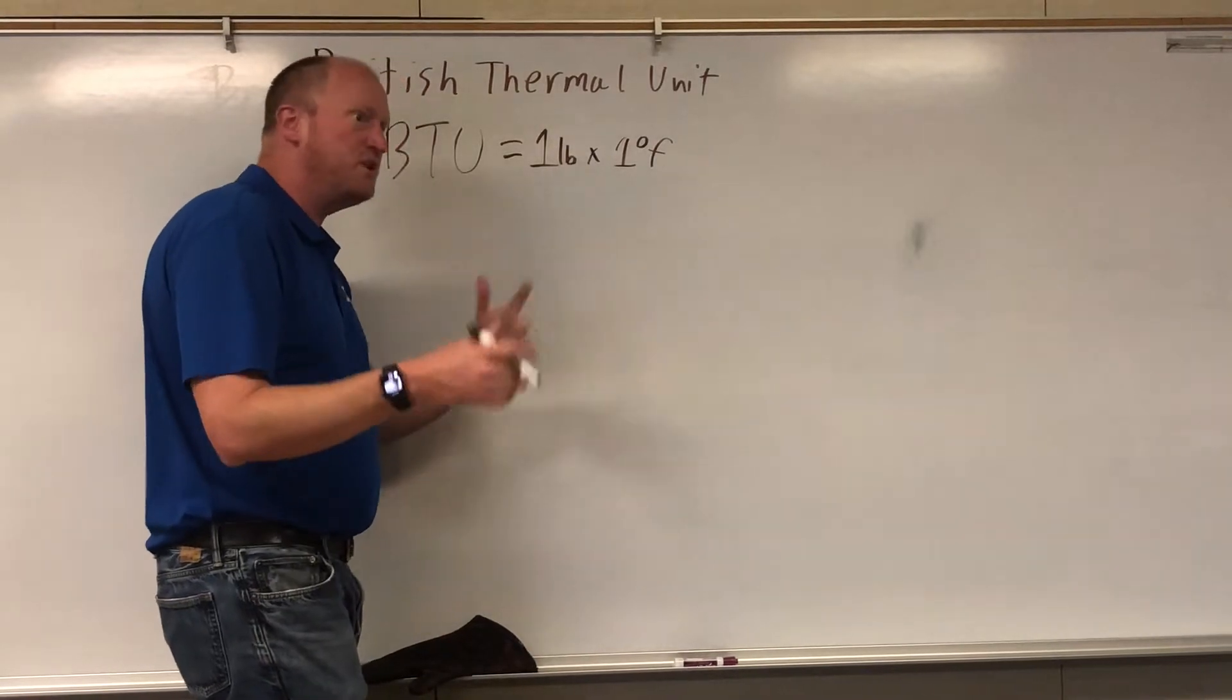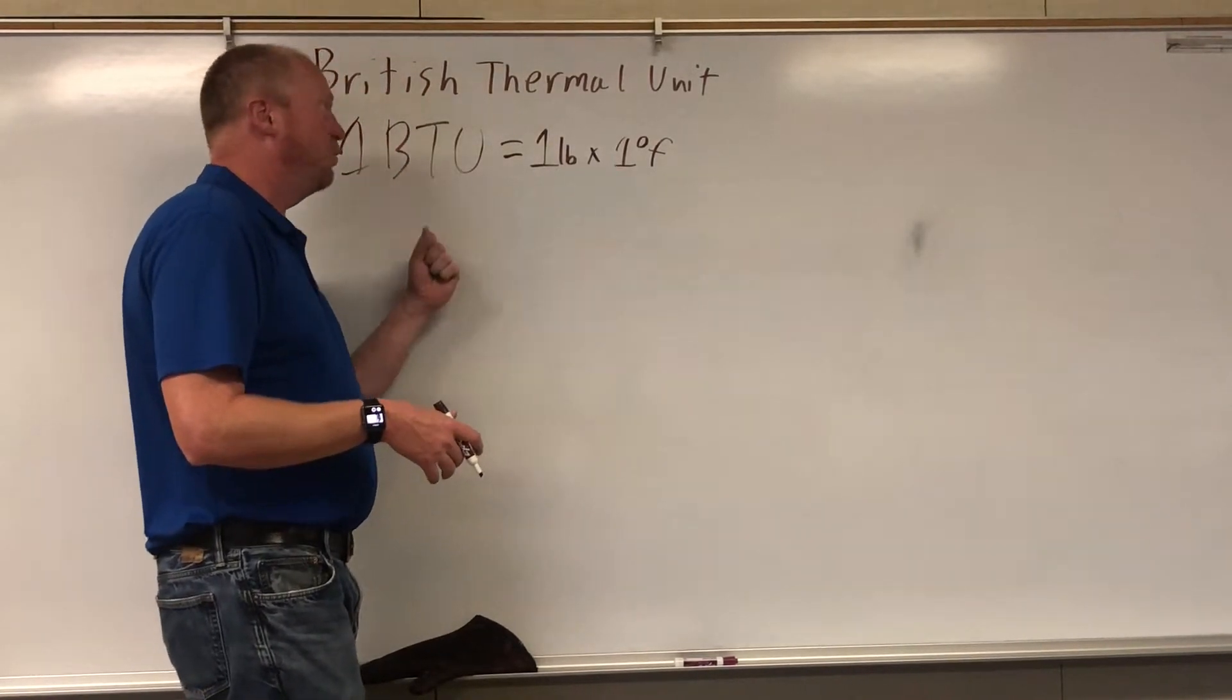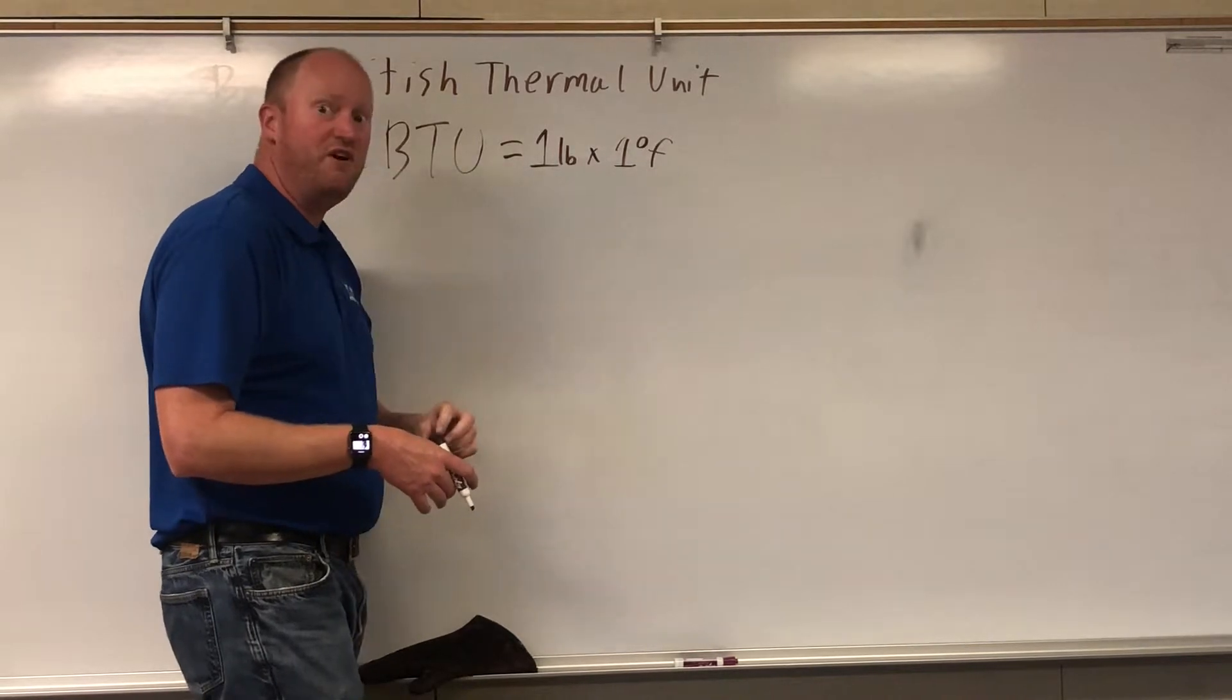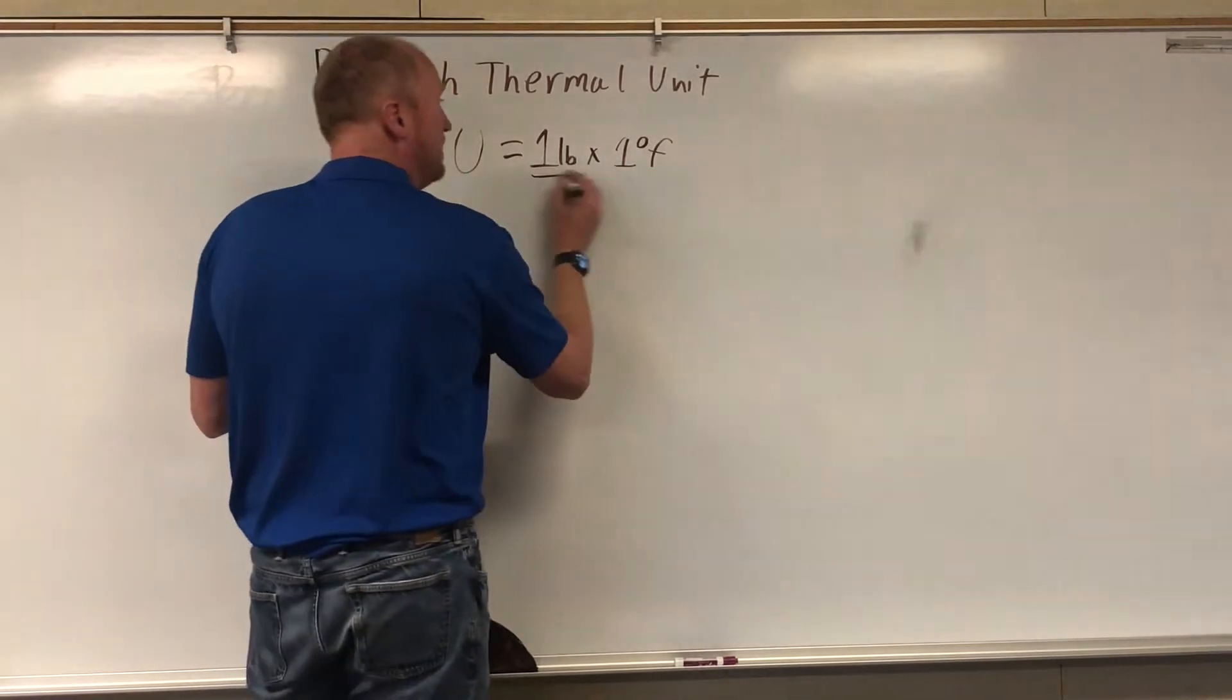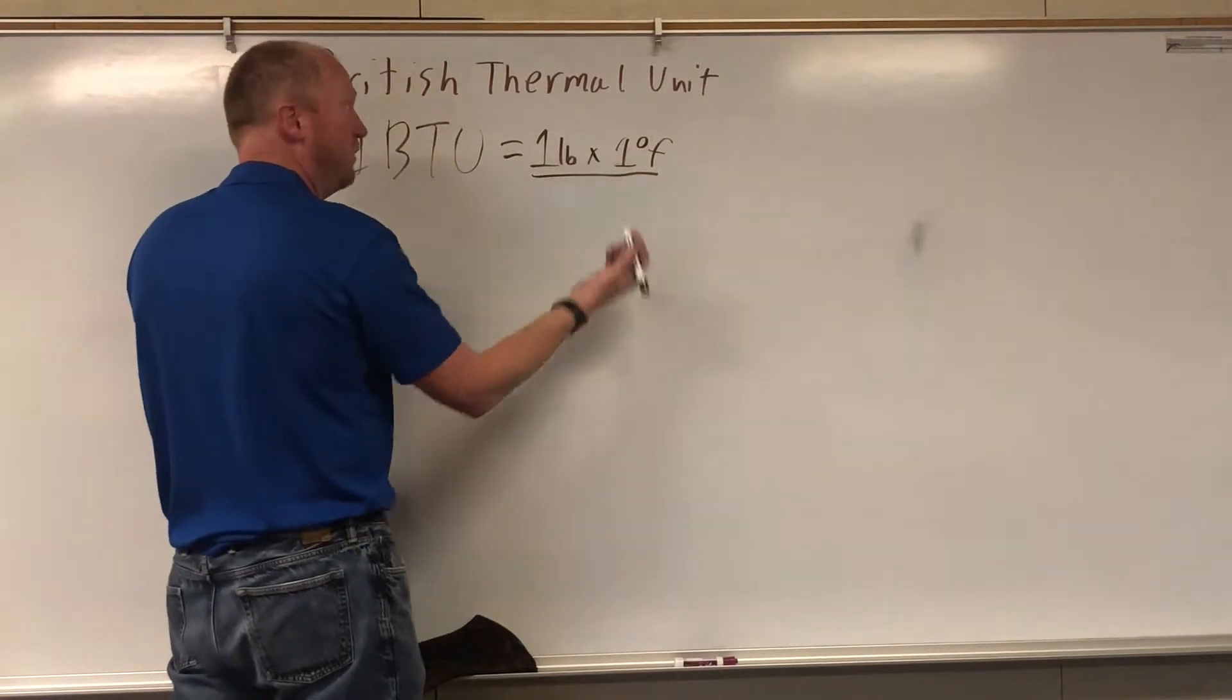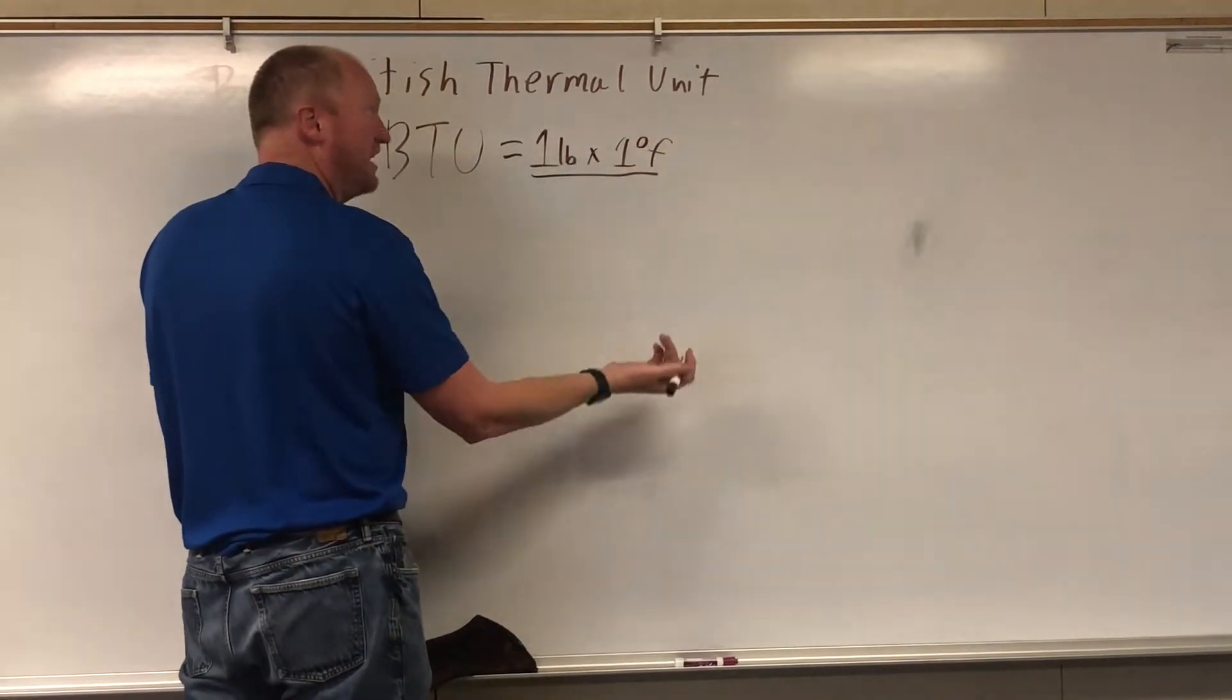This is like the old British Imperial version of that. It's the amount of energy to heat one pound of water, one degree Fahrenheit. So if we want to change this into calories, it's actually a fairly simple procedure. You're just changing pounds into kilograms and degrees Fahrenheit into degrees Celsius.